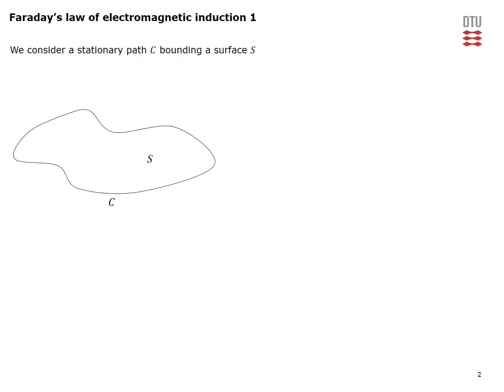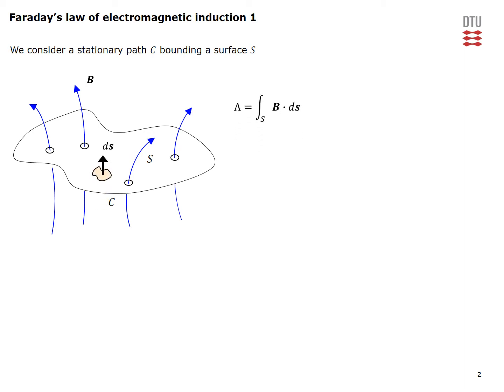So what is Faraday's law of electromagnetic induction? To explain this, let's consider a stationary path C which is bounding a surface S, as shown on the figure. Assume that there is some background magnetic flux density visible on the figure as well. This magnetic flux density will give rise to a magnetic flux through the loop, or more generally flux linkage, that can be determined by the expression shown.